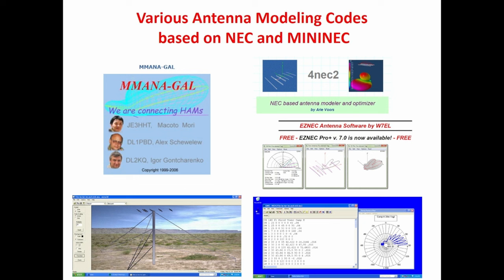Most of the codes that I've been familiar with — and probably most hams are familiar with — are based on either NEC or mini-NEC. Tim probably remembers, I used to come in the 80s and bring floppy disks with the code on them, passing them out for free — and there'd be a mad rush. NEC2 is free to download. MMANA is free and uses the mini-NEC algorithm with automatic segmentation for really accurate results.